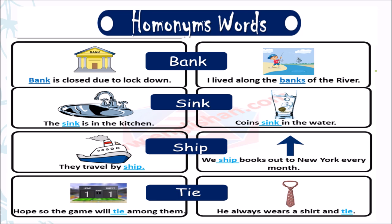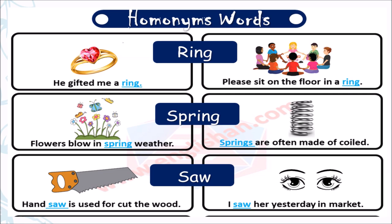Let's see more examples for homonyms with example sentences. 'Bank': 'Bank is closed due to lockdown' and 'I lived along the banks of the river.' 'Sink': 'The sink is in the kitchen' and 'Coins sink in the water.' 'Ship': 'They travel by ship' and 'We ship books out to New York every month.' 'Tie': 'The game will tie among them' and 'He always wears a shirt and tie.' 'Ring': 'He gifted me a ring' and 'Please sit on the floor in a ring.' 'Spring': 'Flowers bloom in spring weather' and 'Springs are often made of coiled metal.' 'Saw': 'A handsaw is used to cut the wood' and 'I saw her yesterday in the market.'